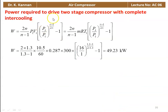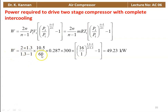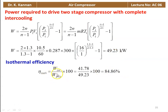Power required to drive the two-stage compressor with complete intercooling for polytropic compression: W equal to 2n by (n minus 1) into M·R·T1 into [(P3 by P1) to the power (n minus 1) by 2n minus 1]. Substituting: 2 into 1.3 by 0.3 into (10.5 by 60) into 0.287 into 300 into (16 by 1) to the power (0.3 by 2.6) minus 1 equals 49.23 kilowatts. Isothermal efficiency equals 41.78 divided by 49.23 into 100 equals 84.86%.